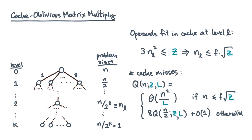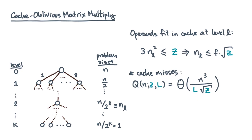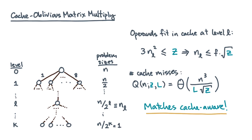Otherwise, in the recursive case, you pay for misses at each of the eight branches, plus a constant number within the function call itself. Solving this recurrence gives n cubed over l root z. This matches the cache-aware algorithm as well as the lower bound — yet remember, the algorithm itself never refers to z or l. That's oblivious.